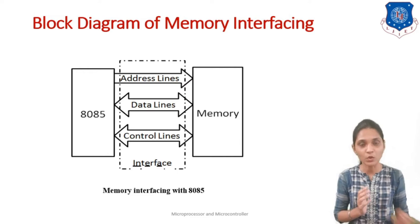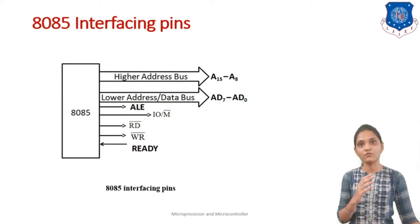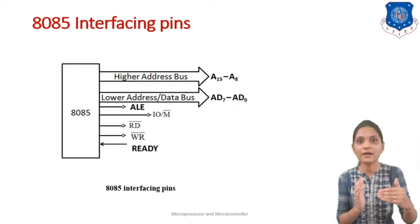This is just an overview of what we require when interfacing memory with 8085 — we have to connect the address line, data lines, and control lines of 8085 with memory. In the enlarged picture, the pins we are going to connect are: the higher order address bus, lower order address and data bus (AD), IO/M bar, RD bar, and WR bar — these are the control pins.